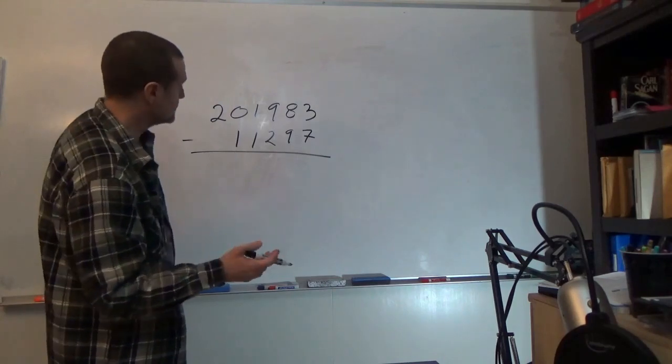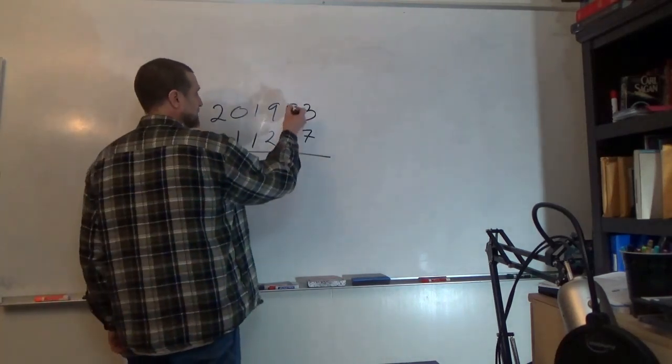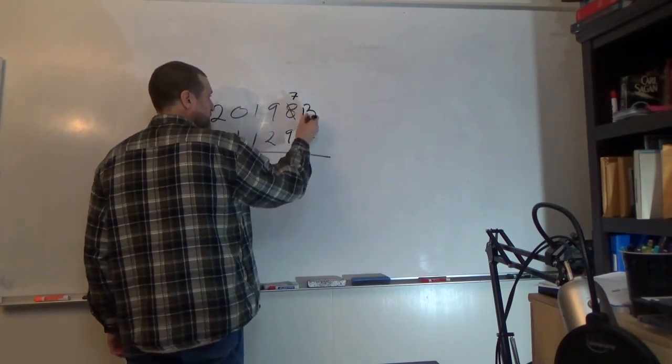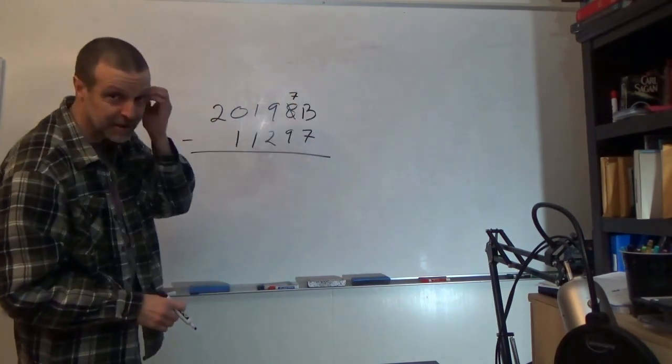Three minus seven, can't do it. So we're going to take this eight and we're going to make it a seven, and we're going to put a one next to the three to make it a thirteen.